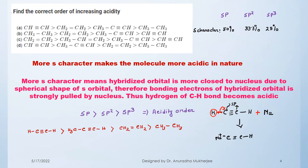The acidity order depends on hybridization: sp hybridized is more acidic than sp2, which is more acidic than sp3. So the correct order of increasing acidity is: ethylene, then CH3C≡CH (which has only one terminal hydrogen), then HC≡CH (which has two terminal hydrogens and is the strongest acid). Hope you understand the explanation of this question.